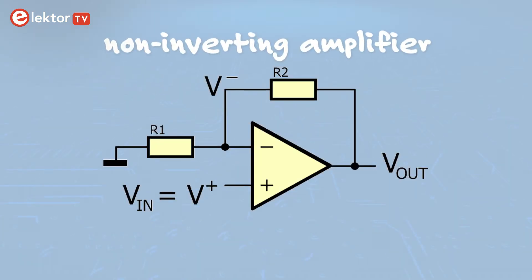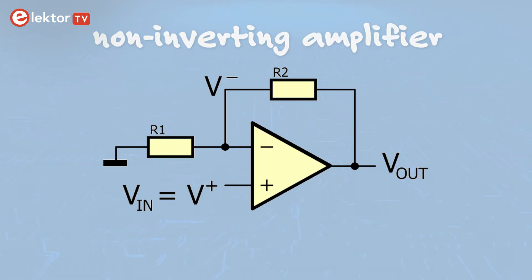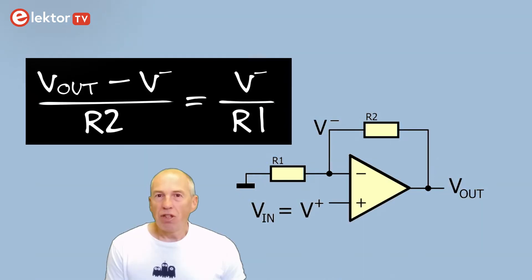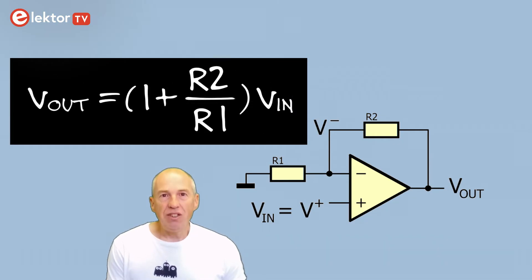A non-inverting amplifier with negative feedback can be made too. V in is now connected to the non-inverting input. Again, using Kirchhoff we can write the equation. Substituting V minus by V in, which is the same as V plus, we get this. Rearranging this gives this. This shows that we have indeed a non-inverting amplifier, of which the gain is 1 plus R2 over R1.